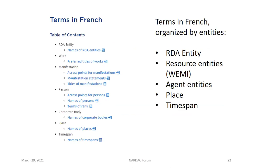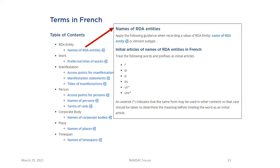Looking at another language, we can see the new organization is slightly different — some different elements are covered — but the order is generally the same: RDA entity applying to all entities, the resource entities (work, expression, manifestation, item) if applicable, the agent entities, and then place and time span entities. Initial articles for the French language for names and titles of RDA entities also appear in that section.